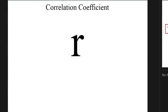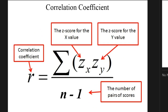The first thing I want you to do is remind yourself that r stands for the correlation coefficient. Now, r equals the sum of the z-score for the x values times the z-score for the y values, divided by n minus 1. It's really important to remind yourself that n stands for the number of pairs of scores. So if I have three XY pairs, n is three — it's not six; we're not counting x and y individually.